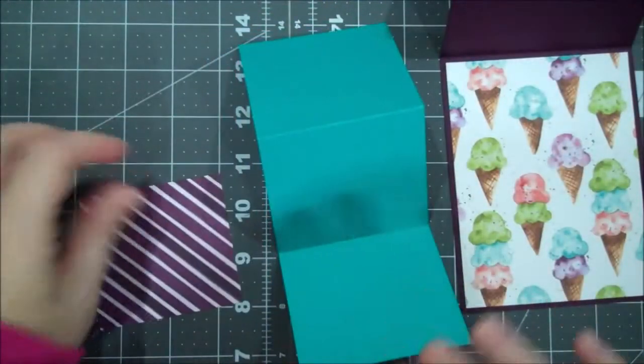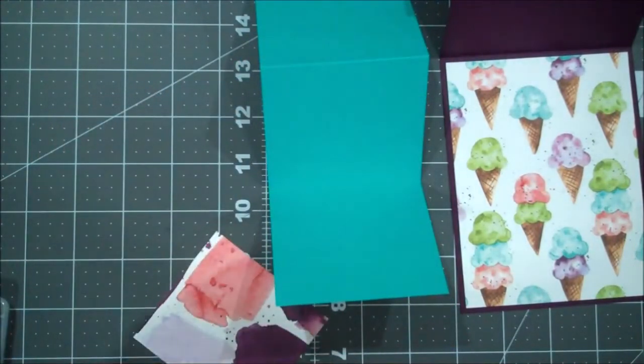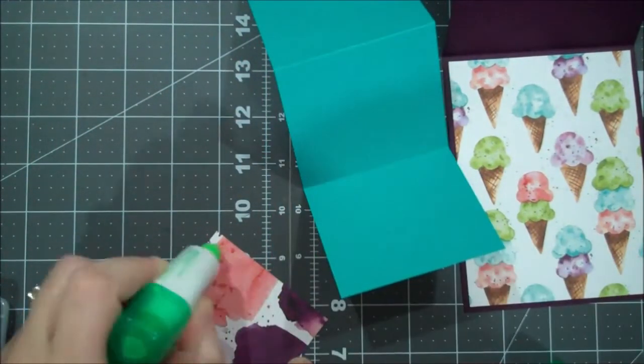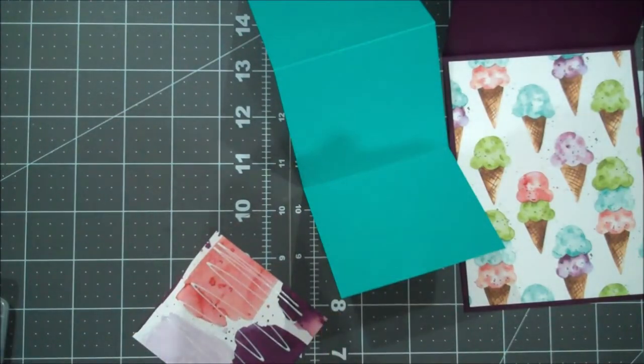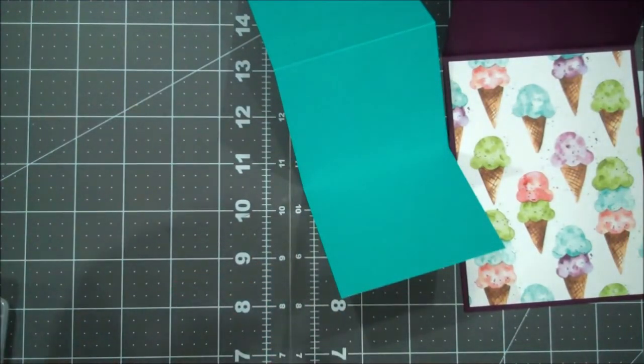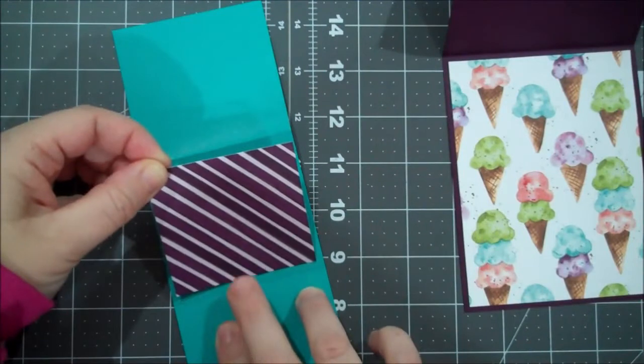And then what you can do to make sure you align it properly is just fold that down. And then you'll know you're straight. So that's our first one. Let's take our inside Bermuda Bay. We're going to take our other piece of DSP and that's going to go in the center of this piece.